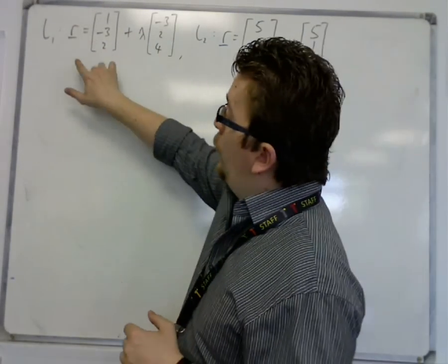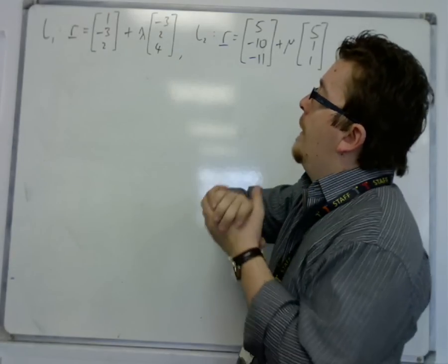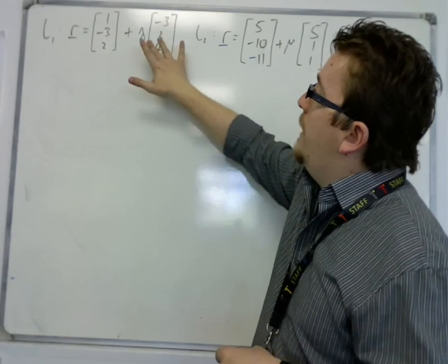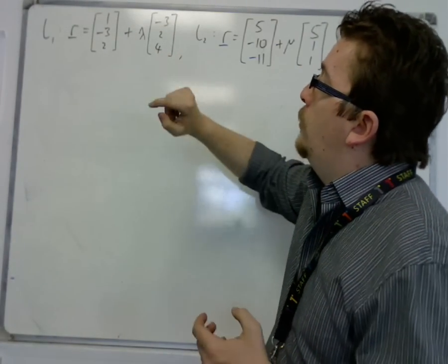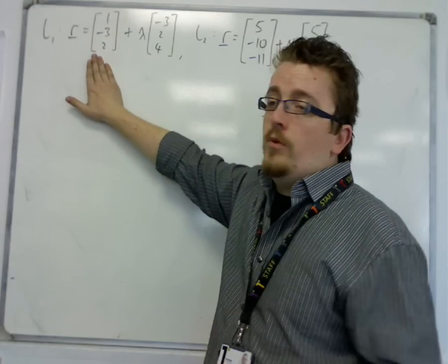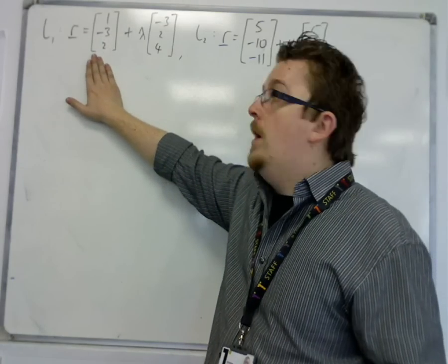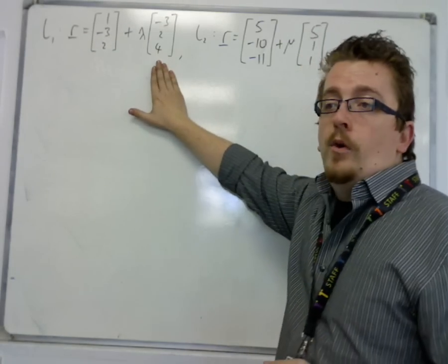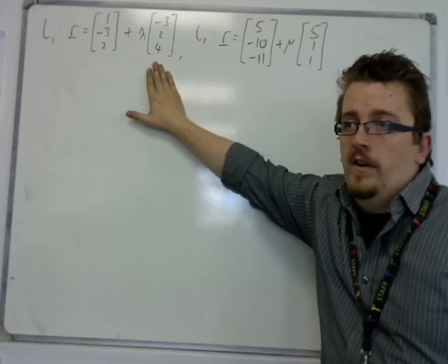So the two lines that I'm going to be working with are up here. We've got L1, line number 1, is R equals 1 minus 3, 2 plus lambda lots of minus 3, 2, 4. So 1 minus 3, 2 is the position vector for line 1 and minus 3, 2, 4 is the direction vector for line 1.